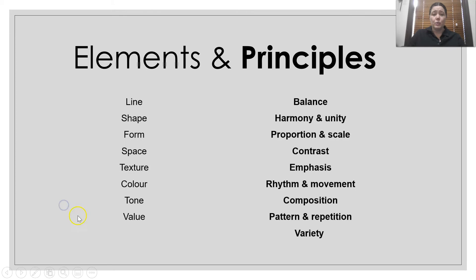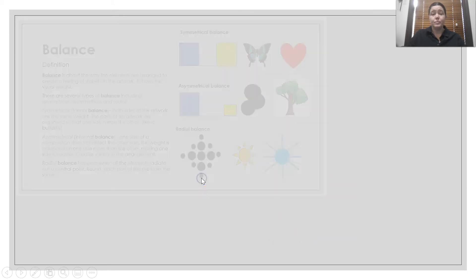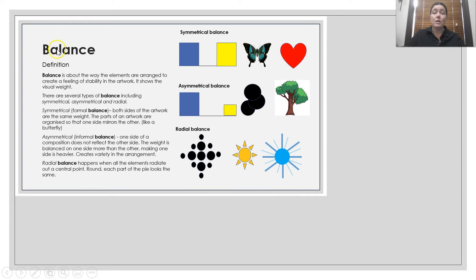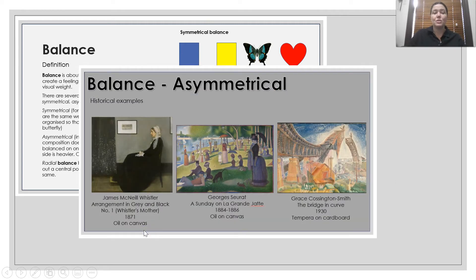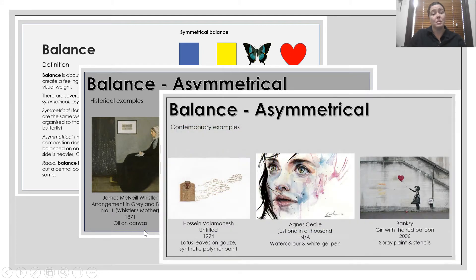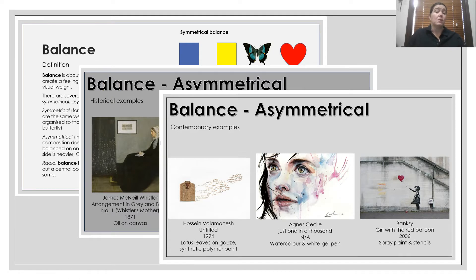So for this video we're going to be focusing on the principles. This video will have a principle followed by a definition and visual representation about what that principle means. It will then show some historical examples and contemporary artwork examples. Just because these particular artworks are chosen to describe a principle doesn't mean that's the only principle or element it shows — it's just to highlight examples so you get to understand them better.